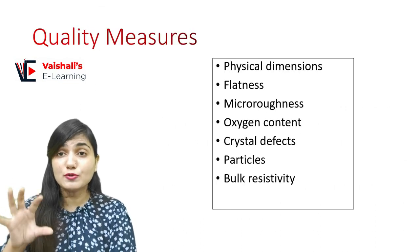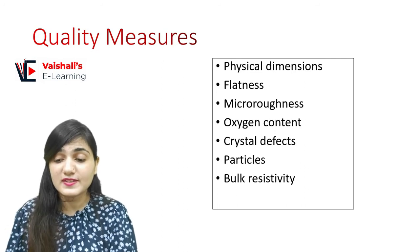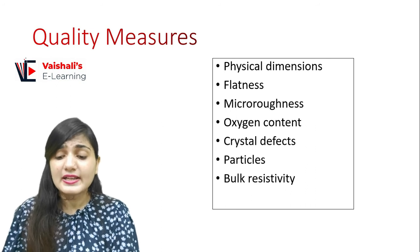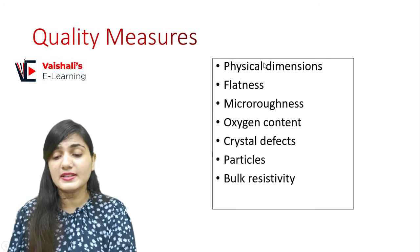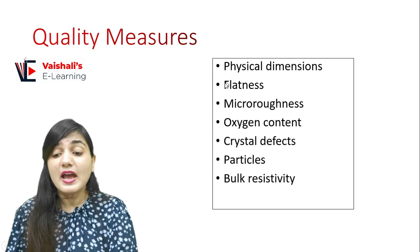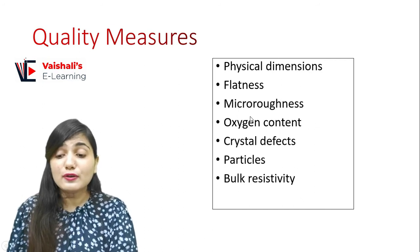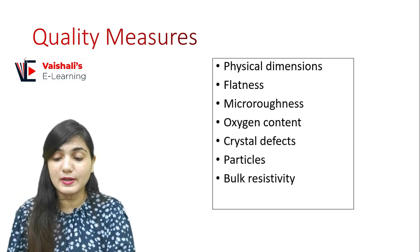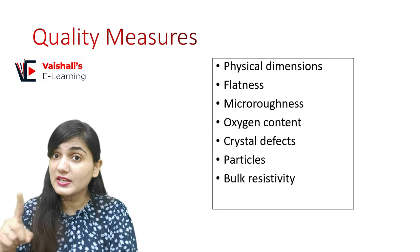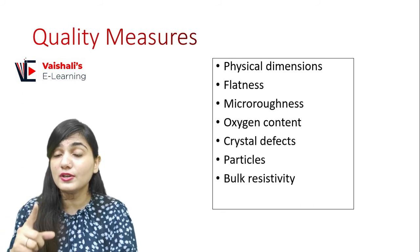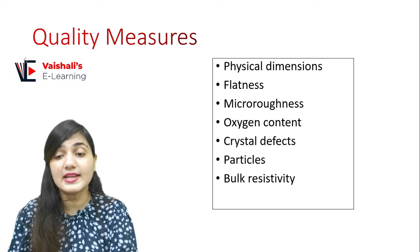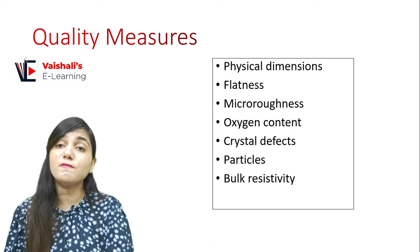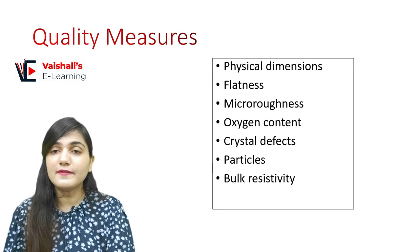Quality measures for the chip include: physical dimensions, flatness, micro-roughness, oxygen content, crystal defects, particles, and bulk resistivity. Micro-roughness and crystal defects should be as low as possible. Oxygen content should be as low as possible, but not so low that it cannot serve as a gettering agent. The number of particles should also be as low as possible.